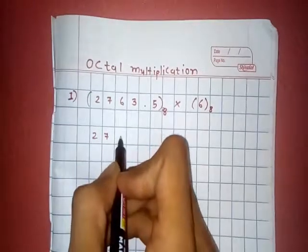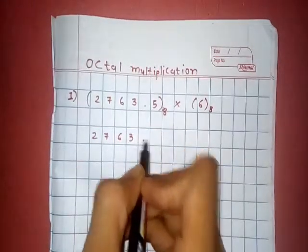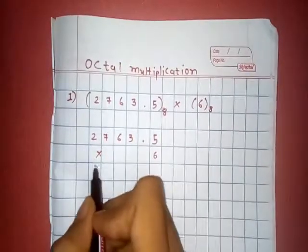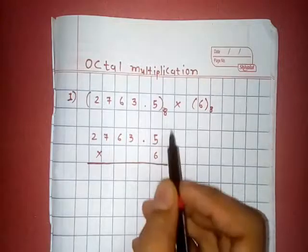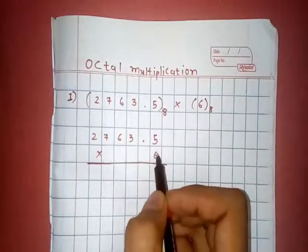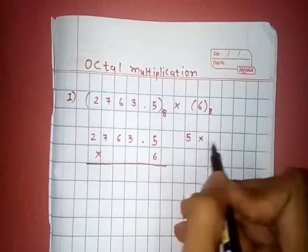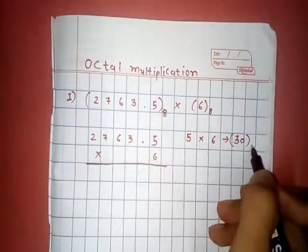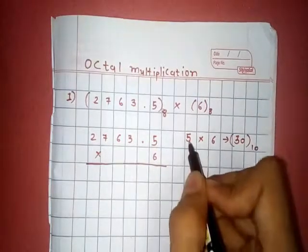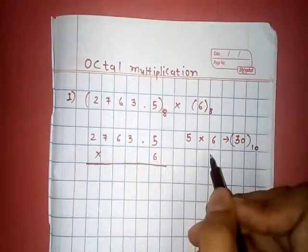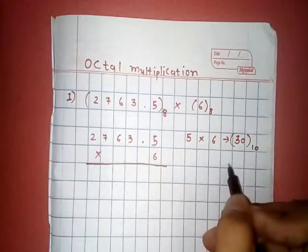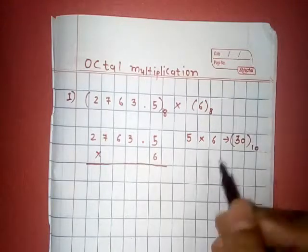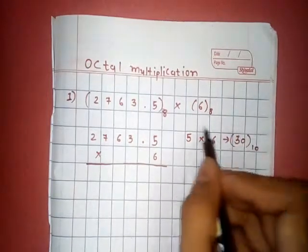Now multiply this value 2763.5 into 6. Now this is in octal value. Now first 5 times 6 is 30. 5 times 6 is 30 but when it is in decimal value this is 5 times 6. Now when we are doing decimal multiplication we can use this concept but when we are doing octal multiplication we can't put directly 30 here.